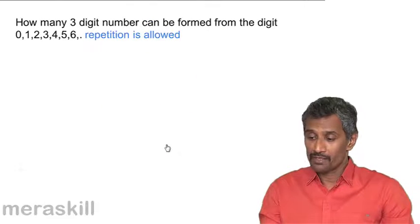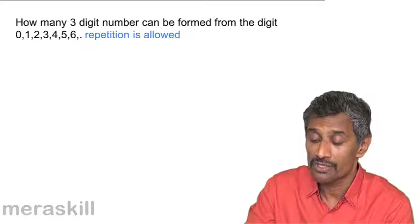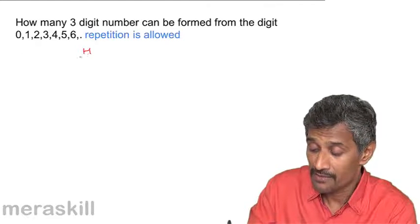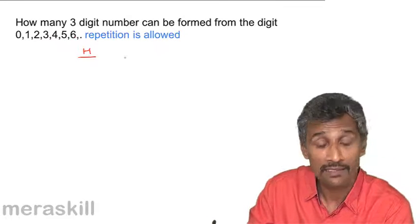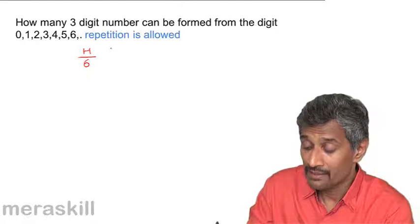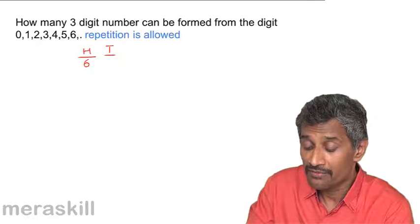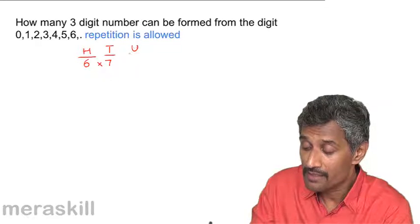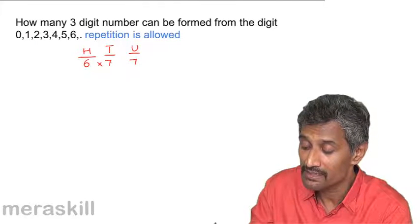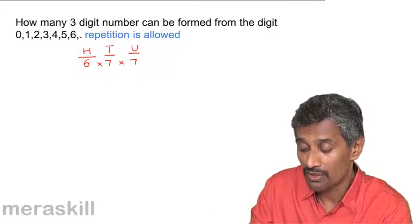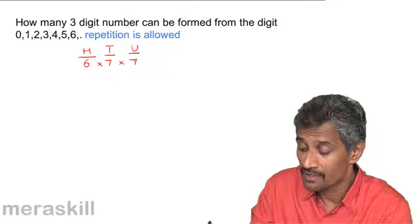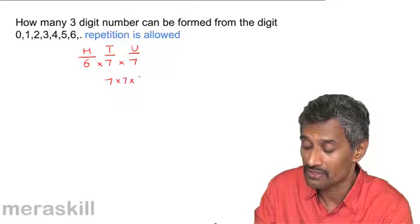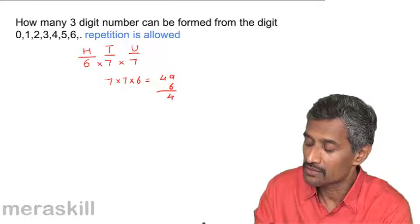Now how many three-digit numbers can be formed from 0, 1, 2, 3, 4, 5, 6 if repetition is allowed? In the hundreds place only 6 digits (1–6) are possible. In the tens and units places, all 7 digits including 0 are available. So total = 6 × 7 × 7 = 49 × 6 = 294 such numbers.